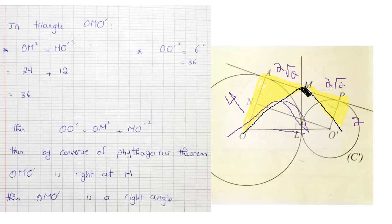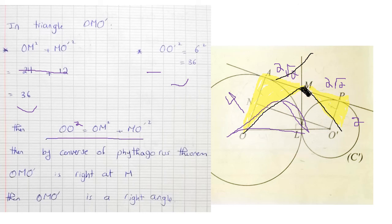Now I have OM, MO', and OO'. Checking converse of Pythagoras: OM squared plus MO' squared equals 24 plus 12 equals 36. And OO' squared equals 6 squared equals 36. Since OO' squared equals OM squared plus MO' squared, by the converse of Pythagoras theorem, triangle OMO' is right-angled at M.